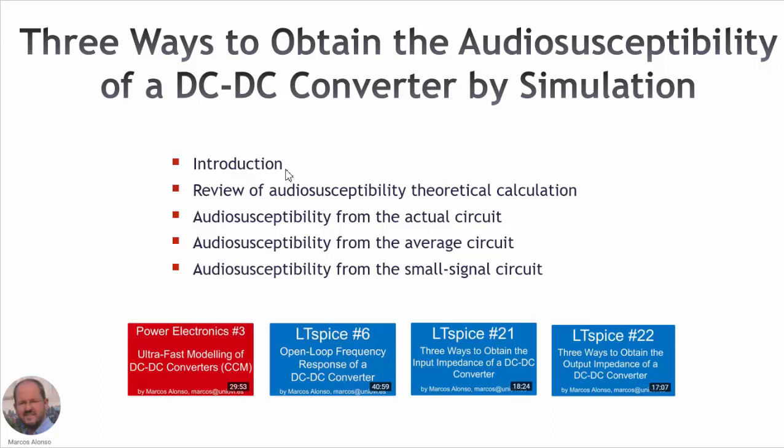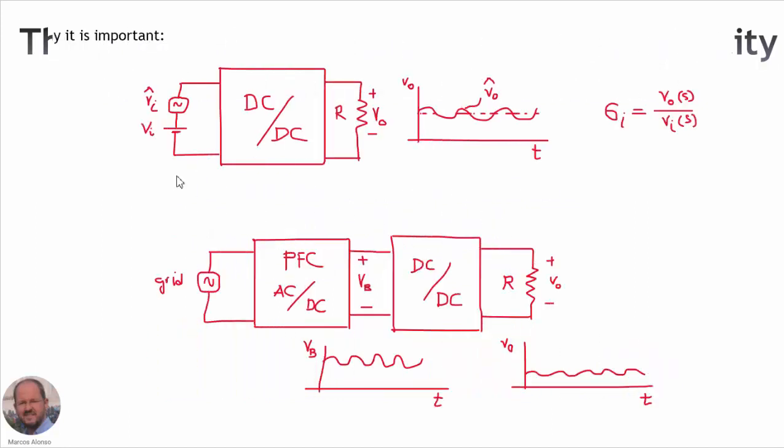In this video we will see an introduction, and we will review how to obtain the audio susceptibility by theoretical calculation. Then we will see three ways to obtain this transfer function by simulation. The first way is using the actual circuit, then by using the average circuit, and finally by using the small signal circuit.